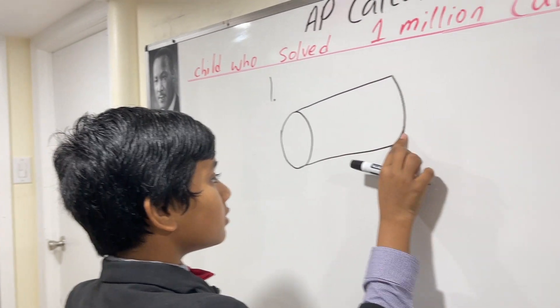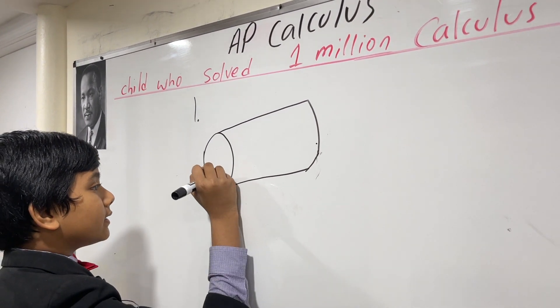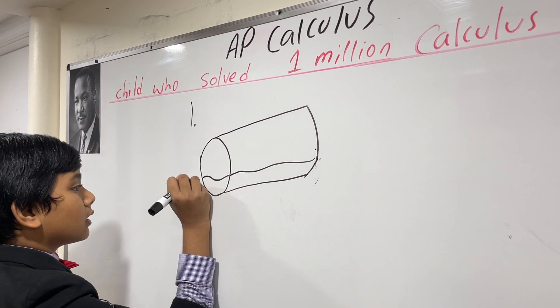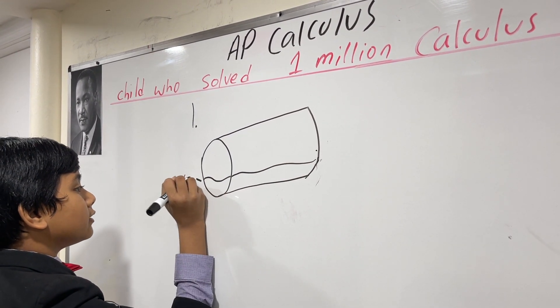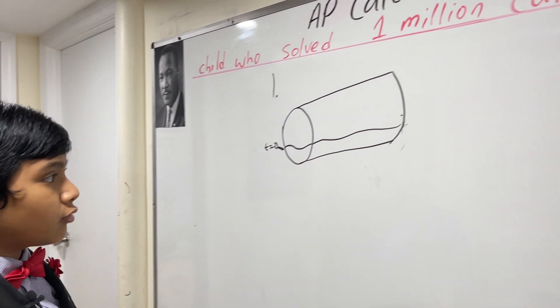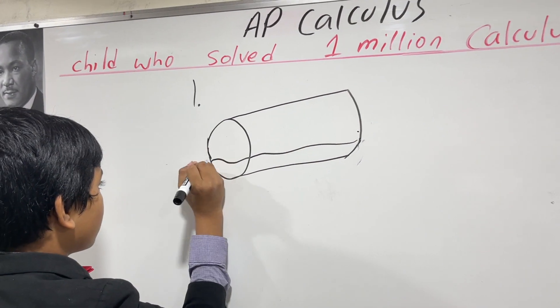Now, let's say that this cylinder is partially filled with water at time t equals zero. This mark shows where the water was at t equals zero. Let's put it over here instead.